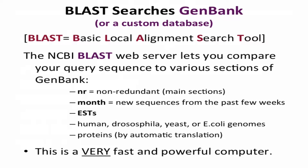There's a web server, which is how most people use BLAST. It allows you to query against GenBank and various predefined subsets of GenBank — things like non-redundant, which is the most commonly searched database. It's essentially the full set of GenBank with duplicated sequences removed. There's also a 'month' option if you just want to see anything new added recently, plus ESTs and specific genomes such as human, Drosophila, yeast, and E. coli with pre-computed BLAST searches, as well as protein databases searchable by automatic translation.